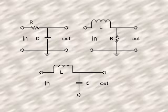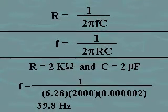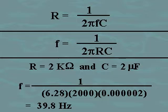Examples of low-pass filters are shown. For the RC filter, the roll-off frequency occurs when R equals X sub C, where X sub C is equal to 1 divided by 2π times the frequency times the capacitance. Therefore, the frequency is equal to 1 divided by 2π times the resistance times the capacitance.